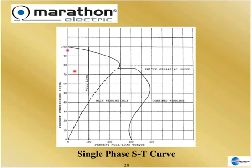Here's the speed-torque curve of the motor with only one winding: it goes all the way down to zero speed and zero torque — it will not start. The auxiliary winding, placed strategically in the motor, causes the wave to get off dead center. It gets started, accelerates up, goes through a switch point, and then can continue to run. Once we get it started, it will run.